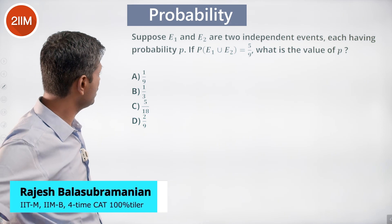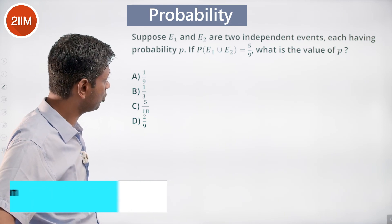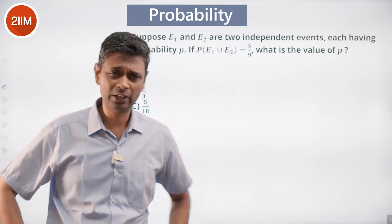Suppose e1 and e2 are two independent events, each having the probability p. Probability of e1 union e2 is 5 by 9. What is the value of p?